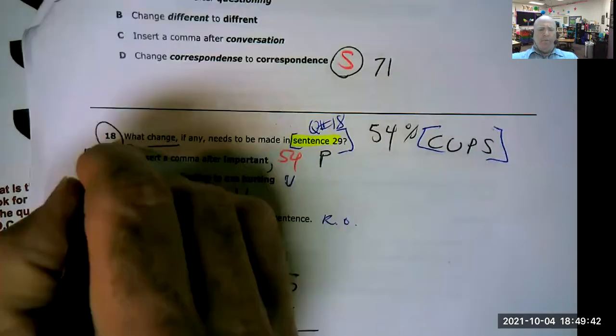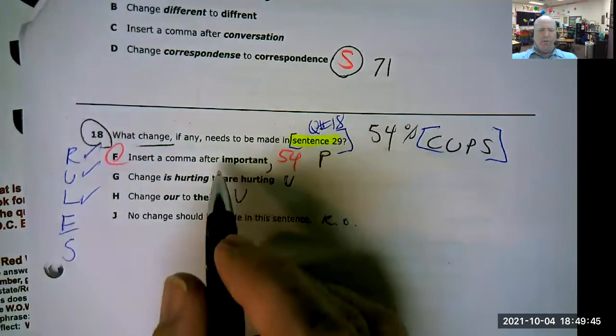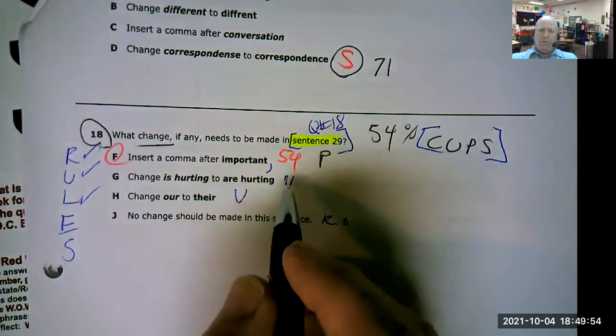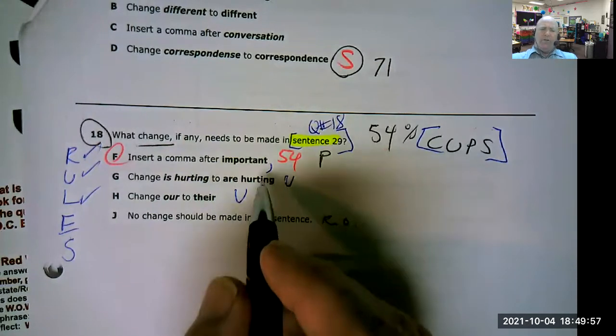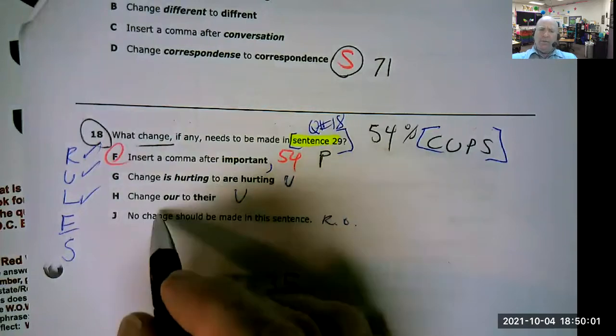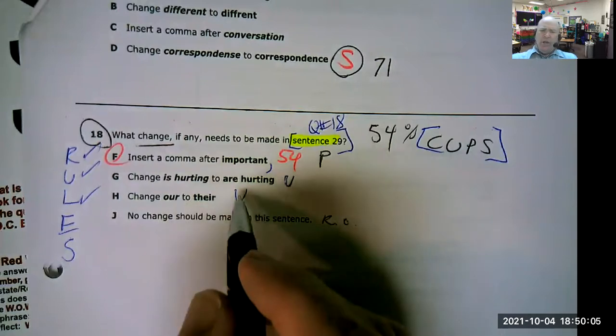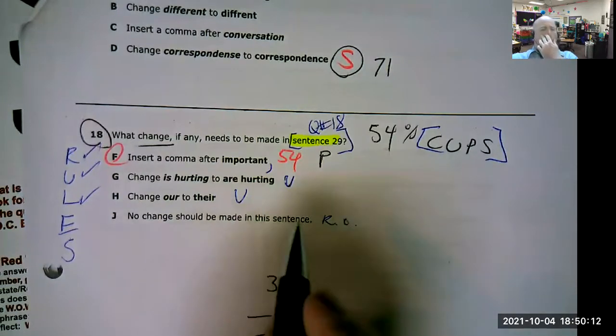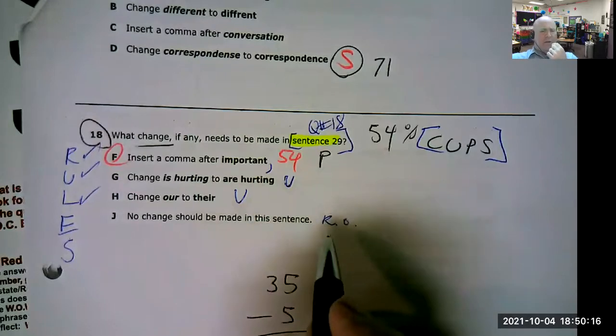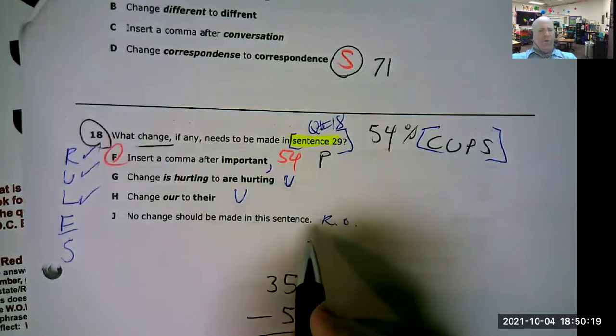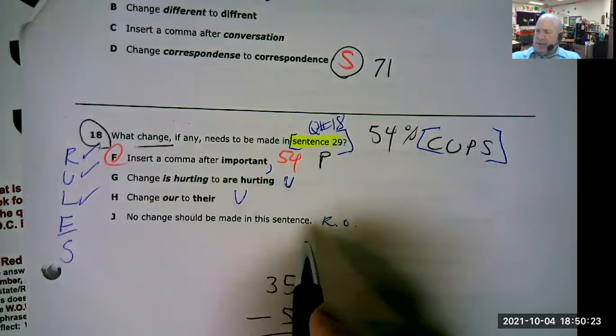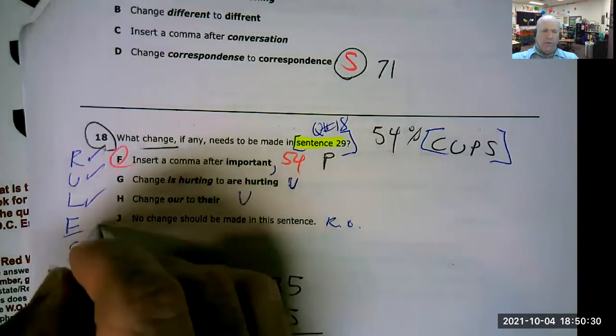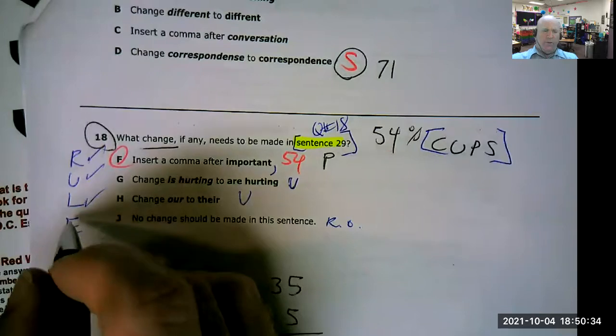So we would put our choices this time. We'll look at our choices. We've read it. We've underlined it. We've labeled a comma after important. That's a P for punctuation is hurting to are hurting. That depends on usage. It depends on the context. How is it being used is or are change our, which is a word to their, or it depends on how it's being used or no change should be made in the sentence. And we're going to find out that the sentence has a run on the way it's written. So you wouldn't want to pick that because that would not make sense. So we will first examine our sentence. That way we can execute our strategies and then begin to eliminate and select.